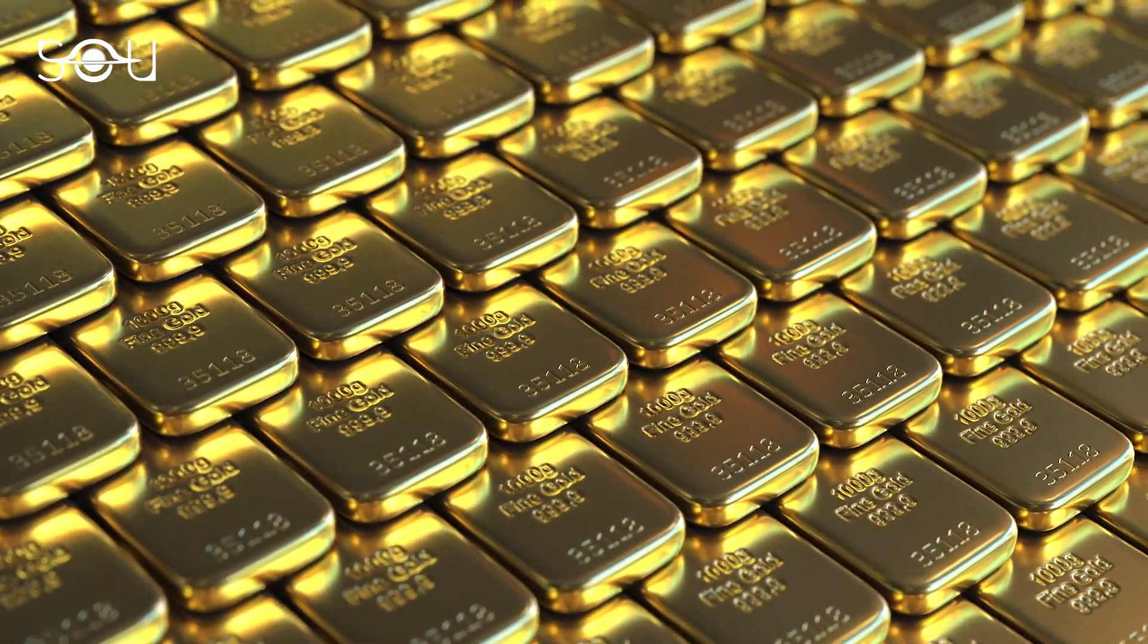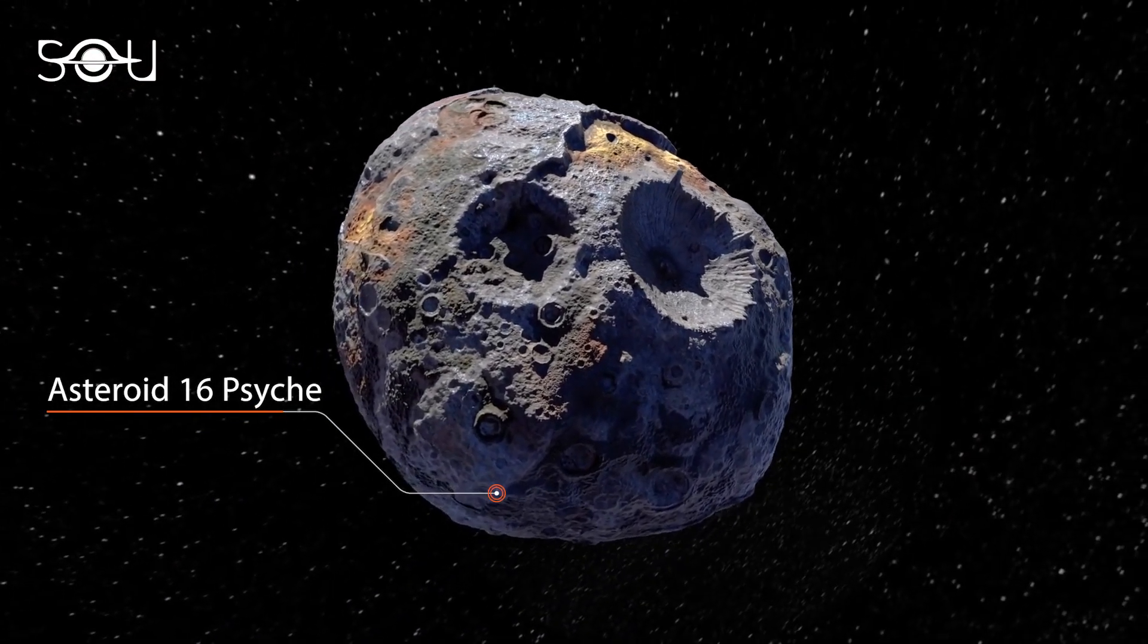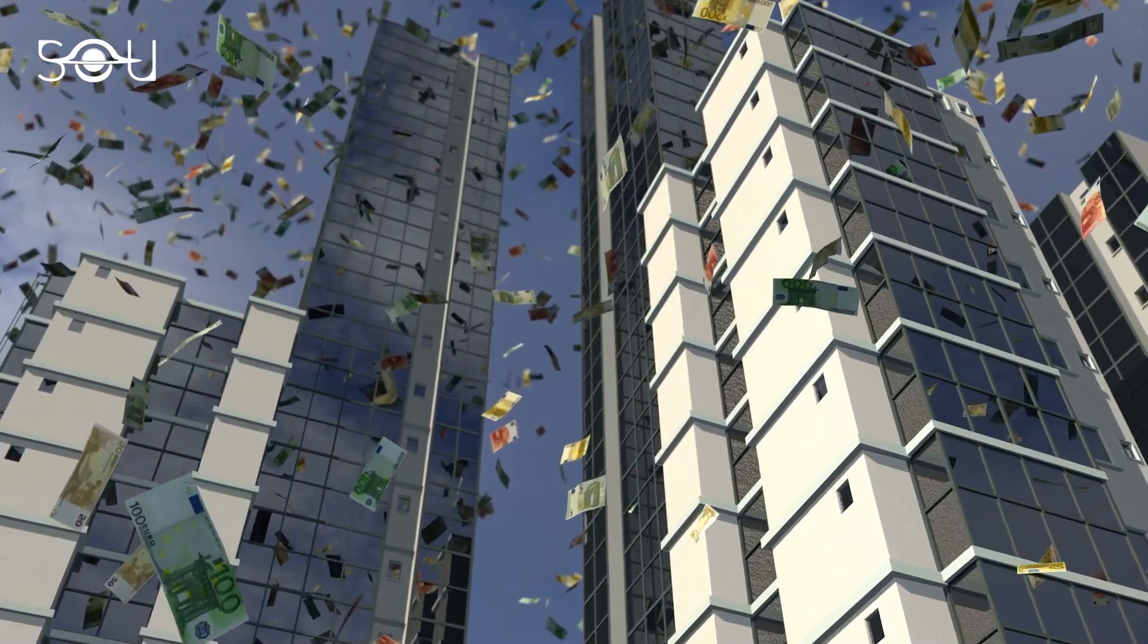Have you ever wondered where did gold come from? There's a massive asteroid between Mars and Jupiter that contains enough gold, along with other metals, to make everyone on Earth a multimillionaire.